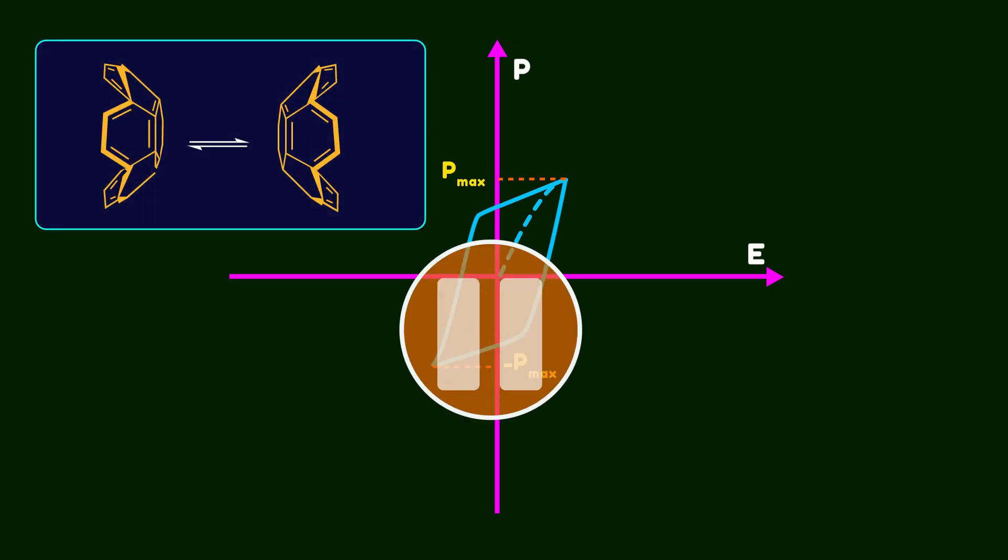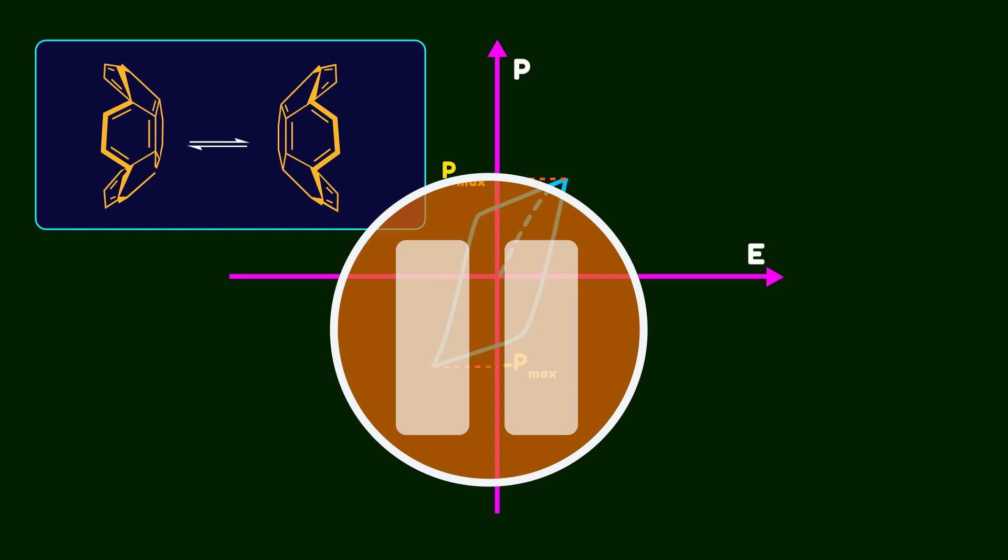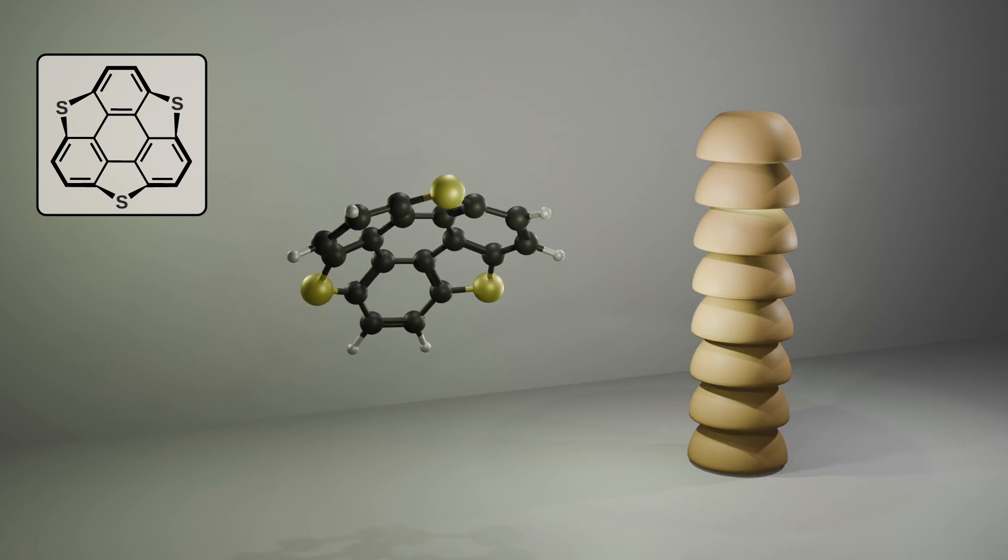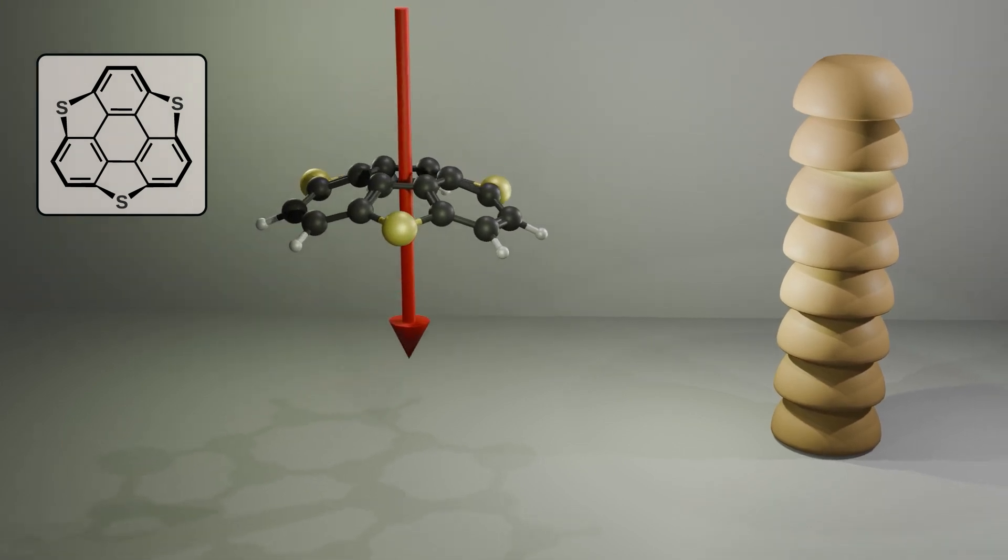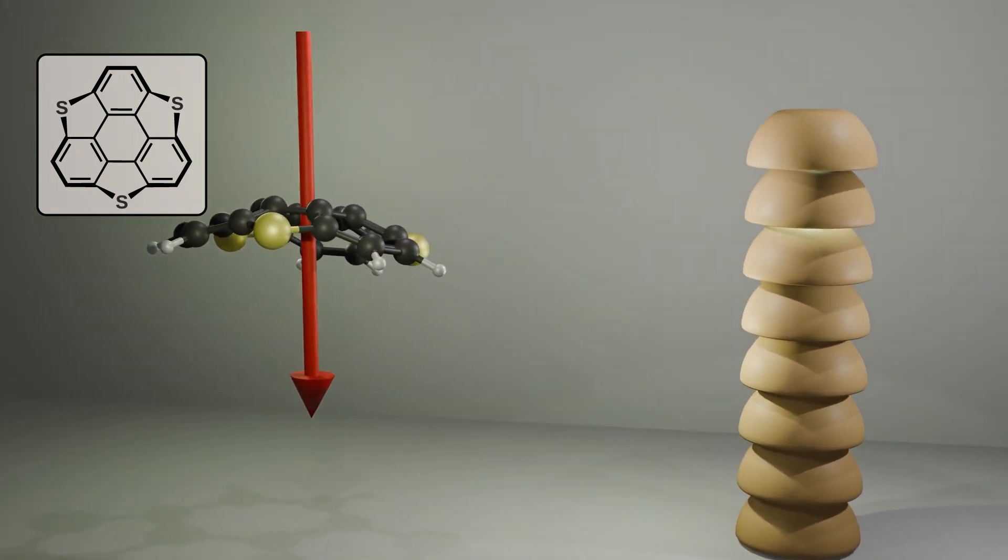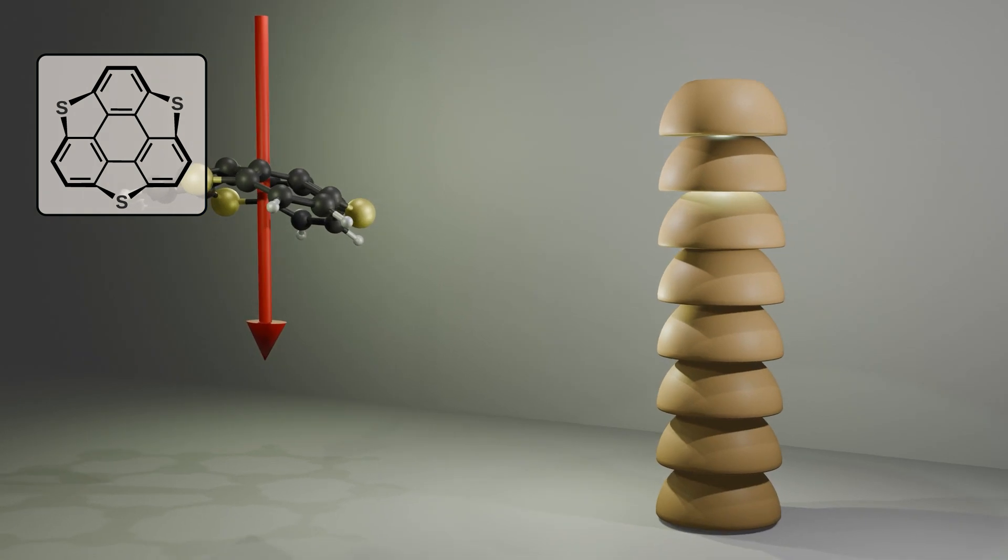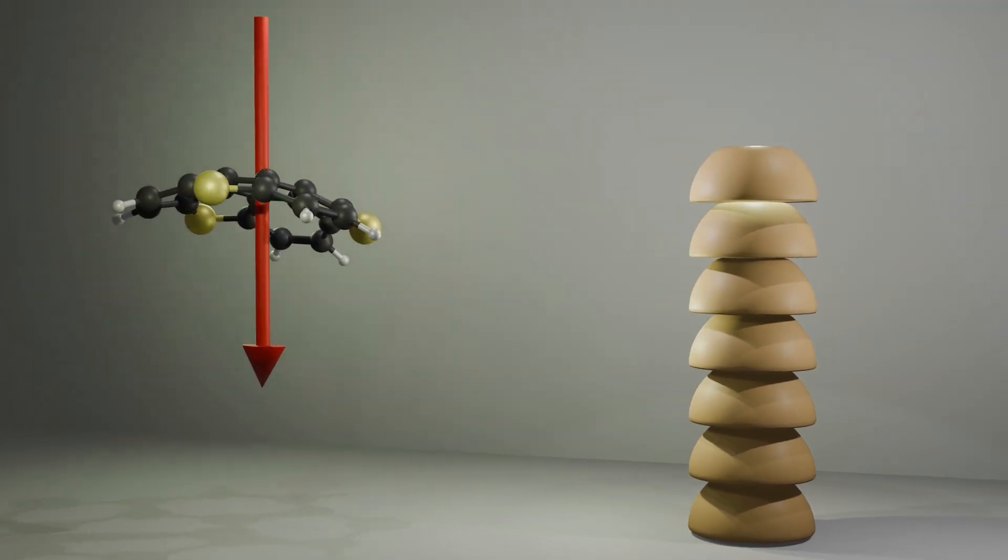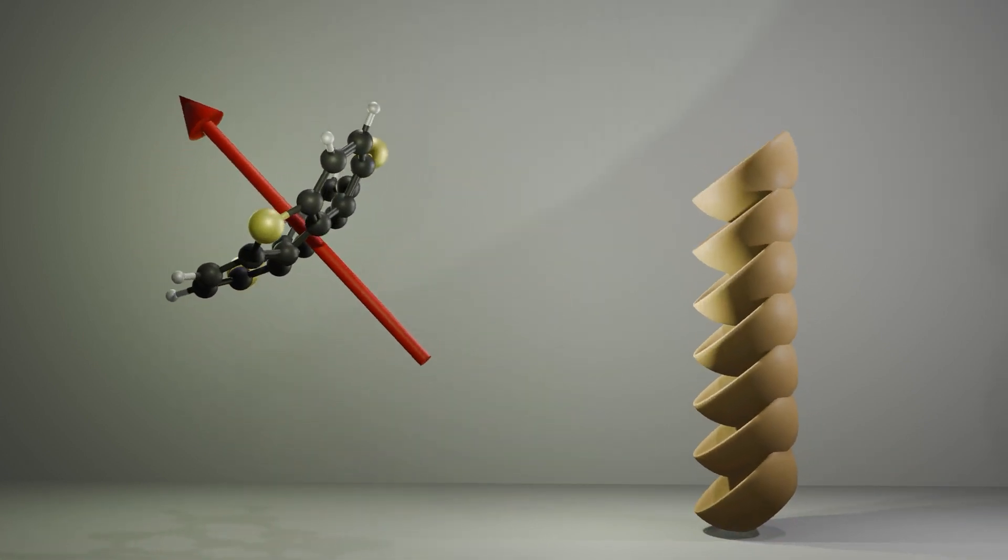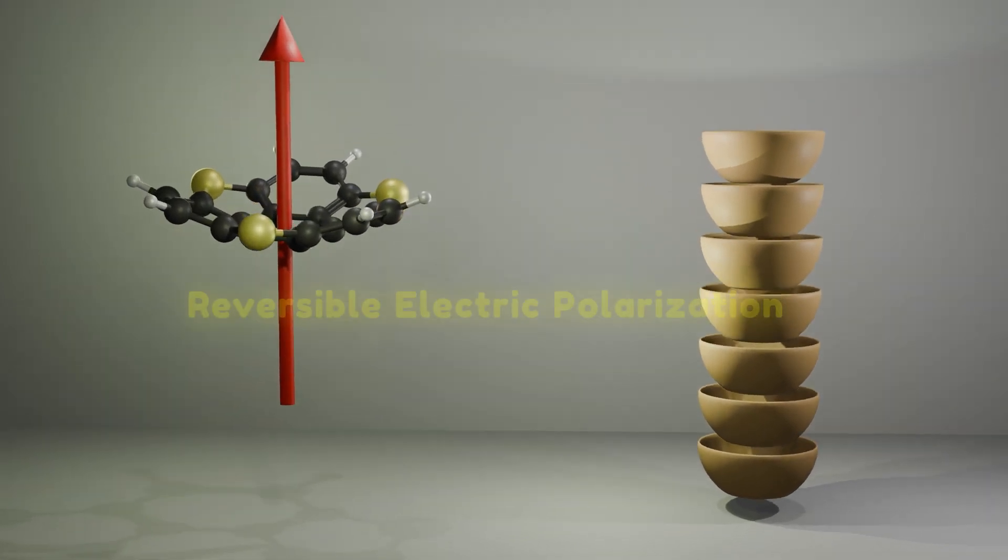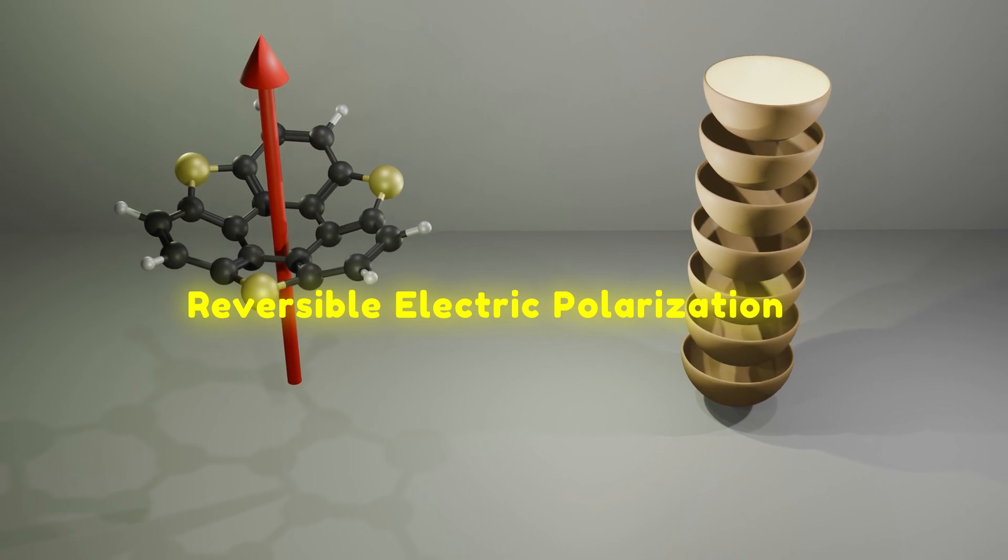Now let's connect this physical property to molecules. Remember the bowl-to-bowl inversion of sumanene. Pause the video and try to figure out how it could demonstrate ferroelectric behavior. Here you can see trithiasumanene which shows a ferroelectric response to an external electric field. The ball-shaped aromatic system possesses a dipole moment. Within the crystal lattice, a supramolecular assembly of these molecules align in a specific direction under the influence of an external electric field. Here, I represent each molecule as a ball stacked together. Due to the bowl-to-bowl inversion mechanism, when the electric field is applied in the opposite direction, the molecules in the crystal can switch their dipoles and realign with the new field direction. In other words, they undergo reversible electric polarization as a direct result of the bowl-to-bowl inversion process.